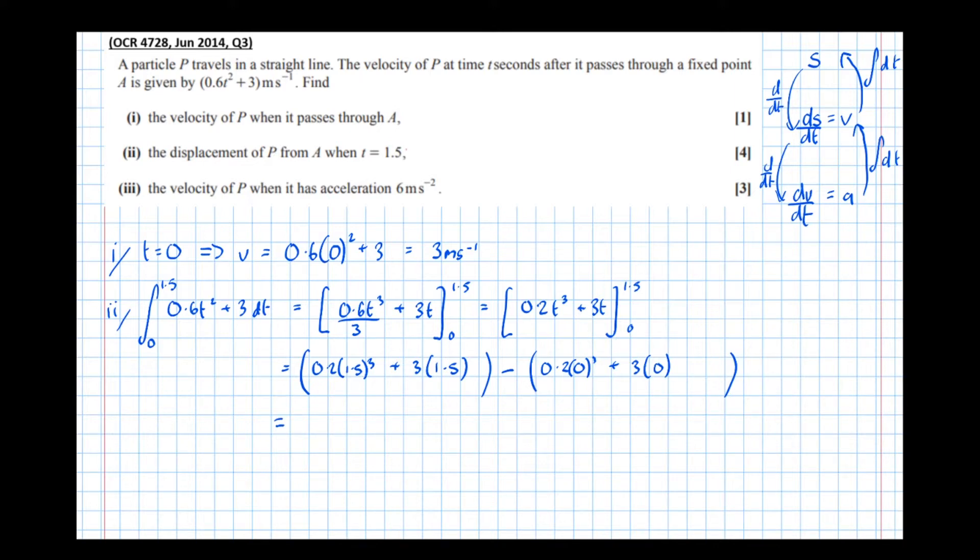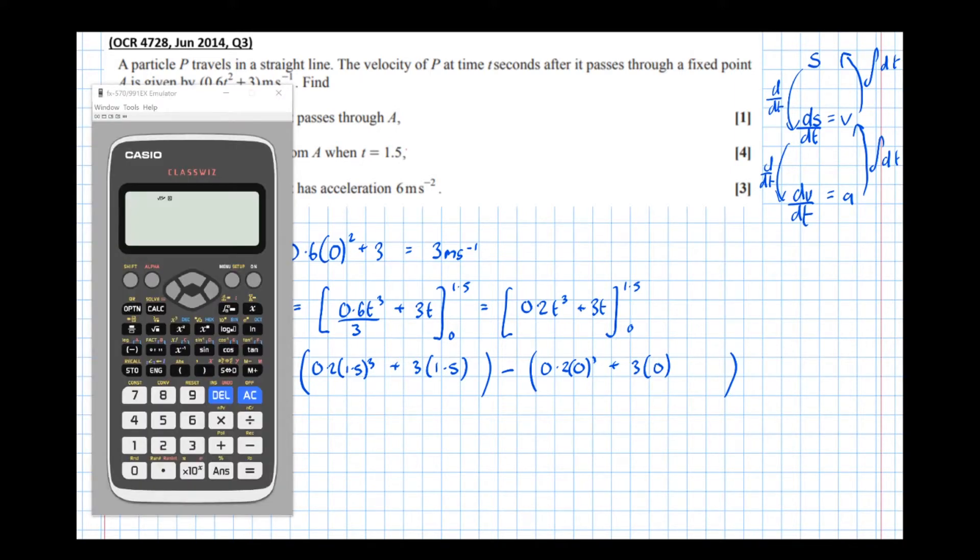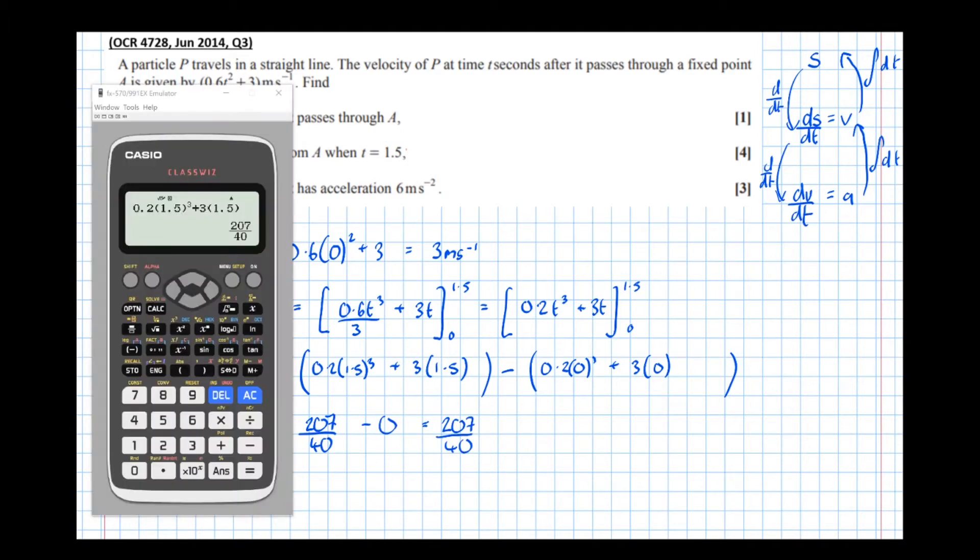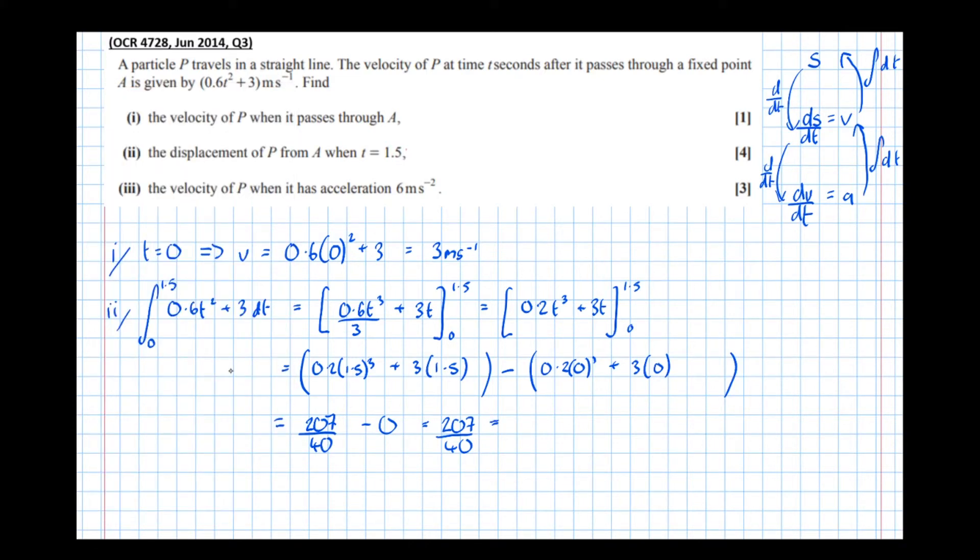Okay, so now putting in the calculator we've got 0.2 times 1.5 cubed plus 3 lots of 1.5 equals 207 over 40, take 0 equals 207 over 40, which as a decimal is 5.175 equals 5.175 meters. Units again are important.